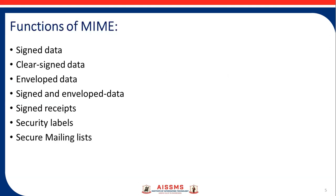Next are the functions of MIME. The first is signed data, which consists of a message encrypted with a private key, and both the content and the digital signature are encoded with base 64. Next is clear signed data, which is very similar to signed data, but it is clearly mentioned that it uses encoding based on base 64.